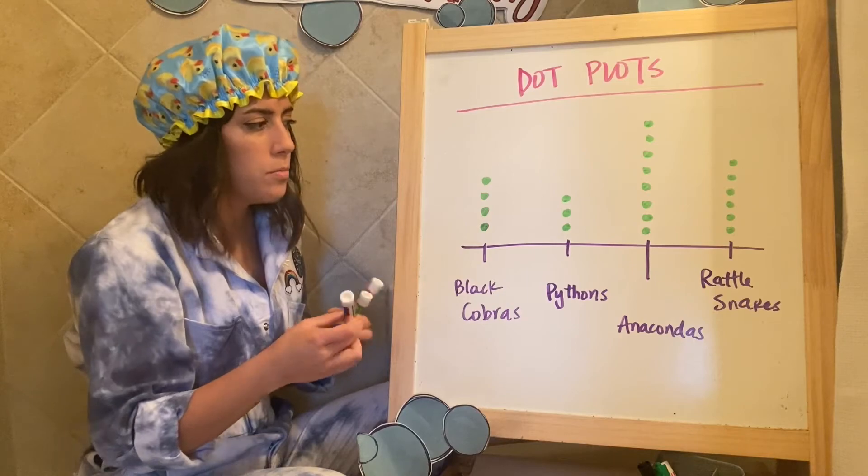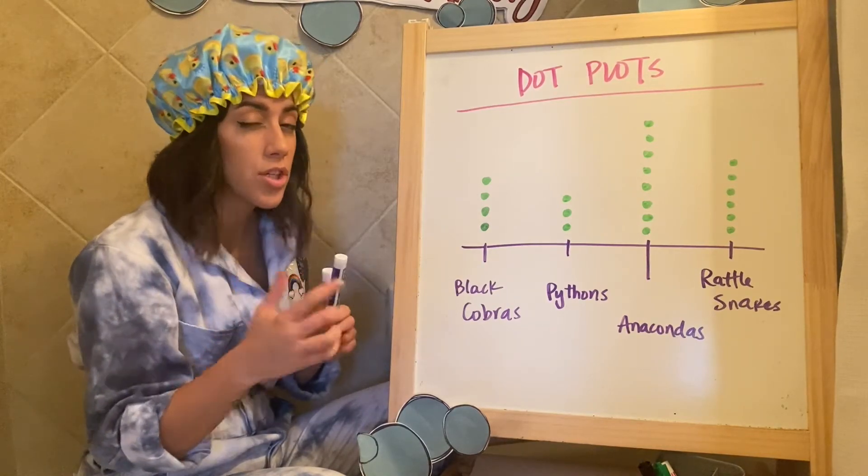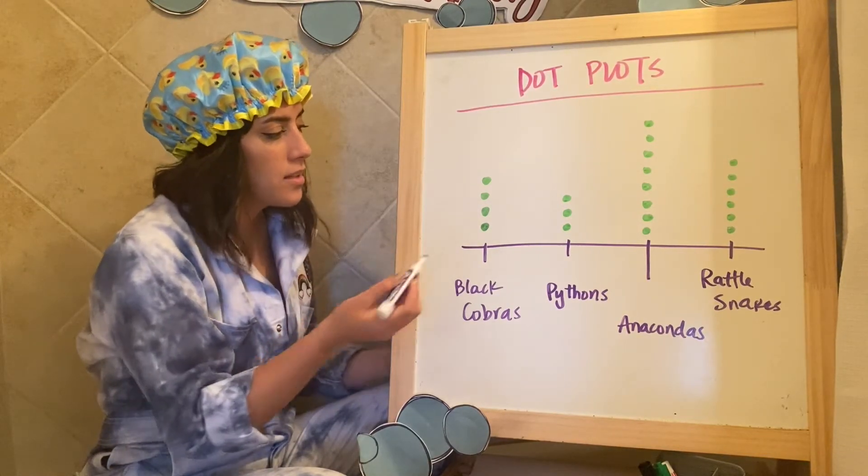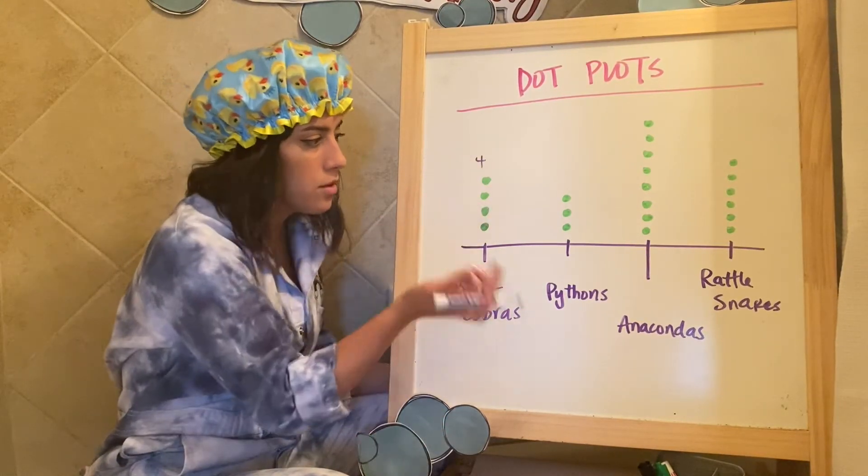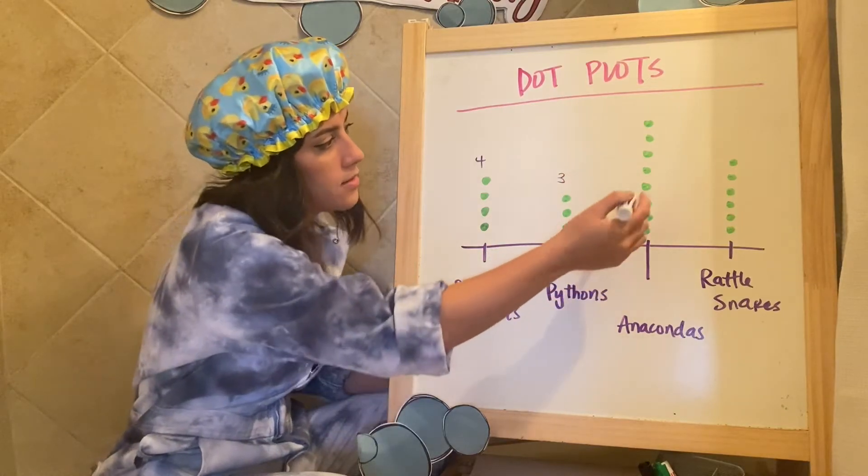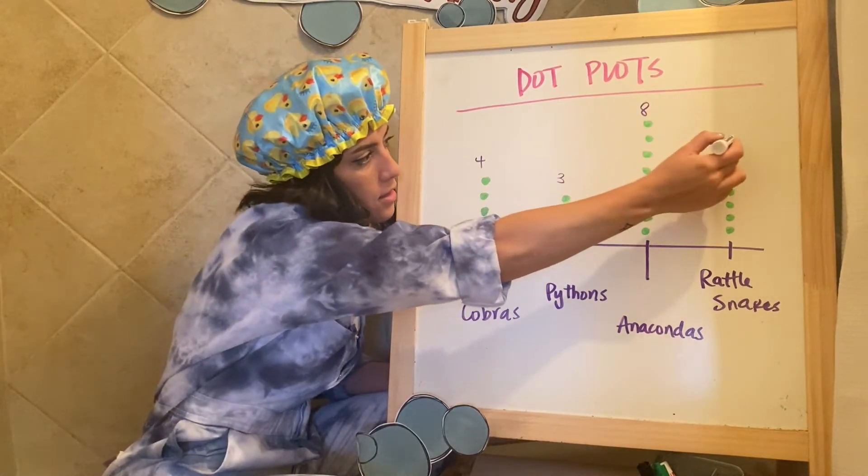Just always be sure to make like double check your work. I always like to just count them and write the number nearby if you don't see any numbers. So one, two, three, four, I'm checking there's four. Yes, there's three here. Yes. Anaconda, there's eight and then there's six.